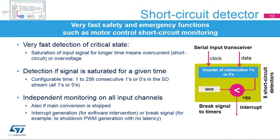The short circuit detector monitors input serial channels for a saturation state. When an input signal is saturated, it means it is outside the allowed measurement range and therefore there is an overflow or underflow of the signal. When measuring current, this event usually detects an overcurrent or short circuit, or an overvoltage when measuring the voltage. Detection of input signal saturation is based on monitoring the input serial data stream from the sigma-delta converter, watching if there is a consecutive set of 1s or 0s for a relatively long time. This maximum saturated time can be set in the range from 1 to 256 samples.